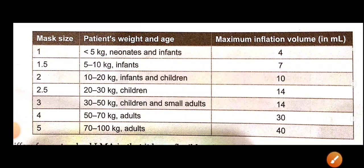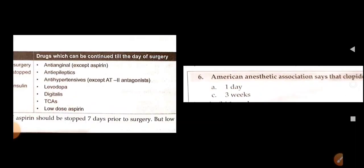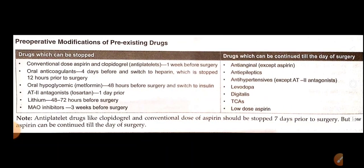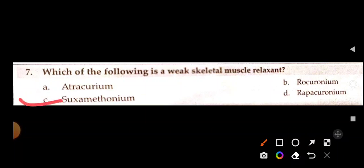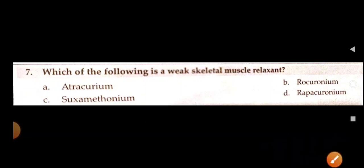Which of the following is a weak skeletal muscle relaxant? Options: atracurium, rocuronium, succinylcholine, or rapacuronium. The answer is succinylcholine — it is a weak skeletal muscle relaxant.